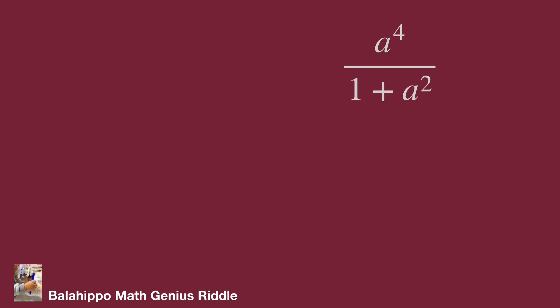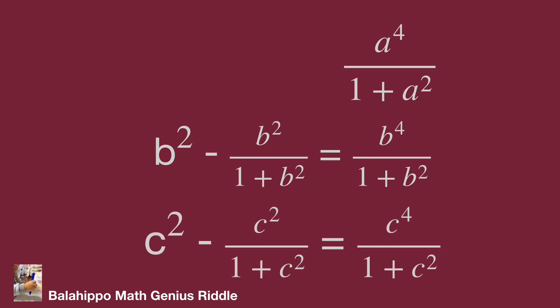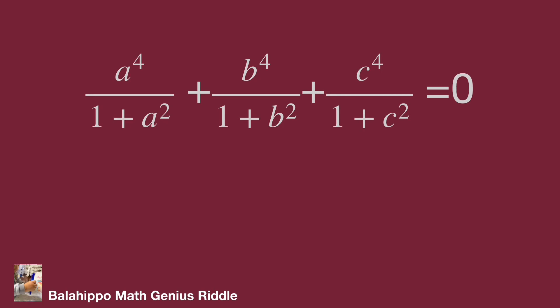The same operation applies to the second group: b² minus b² over (1 + b²) equals b⁴ over (1 + b²). And the third group: c² minus c² over (1 + c²) equals c⁴ over (1 + c²). Substituting these results back into the equation, we get a⁴ over (1 + a²) plus b⁴ over (1 + b²) plus c⁴ over (1 + c²) equal to 0.